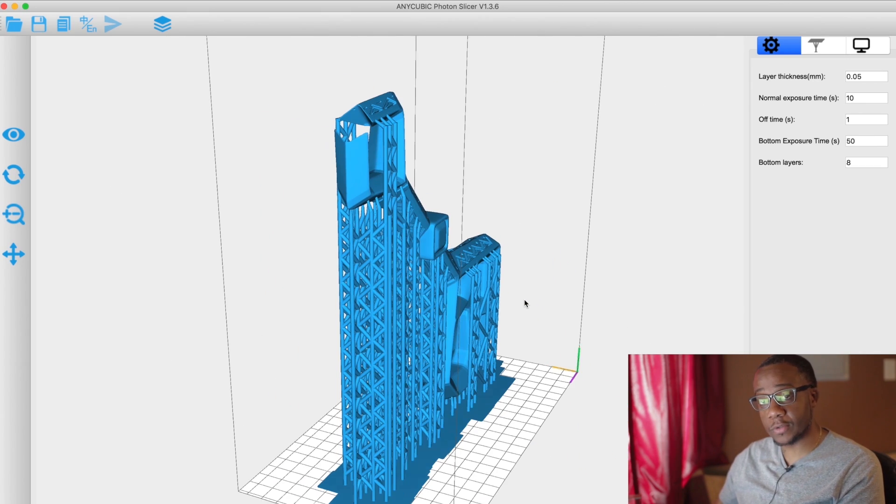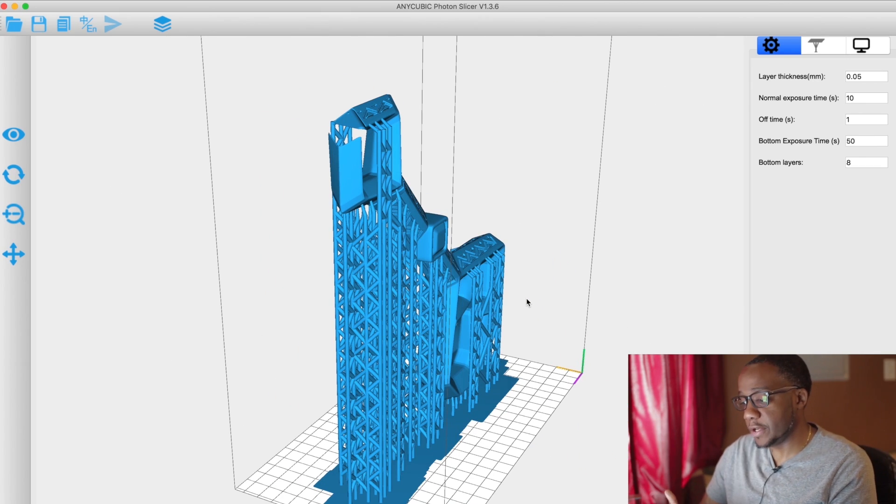I'm going to export this out to Cura, and then Cura will go ahead and slice it. Then we'll have a G-code and we'll take that G-code to the SLA printer, have it printed, and I'll come back and show you guys what I have when it's all printed.